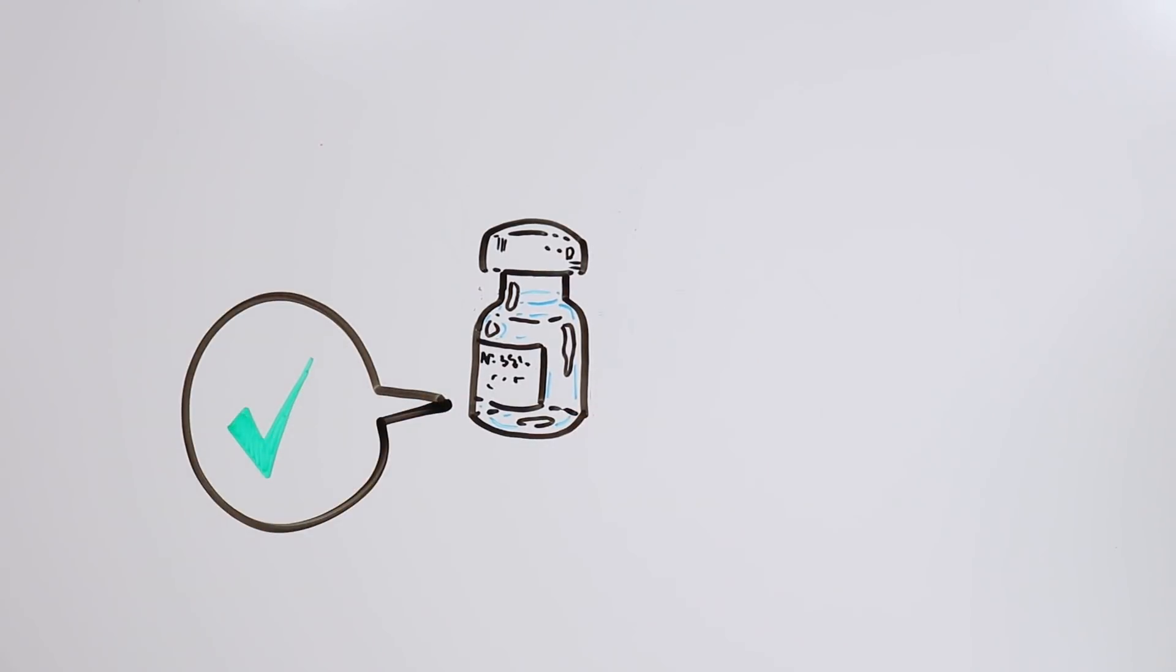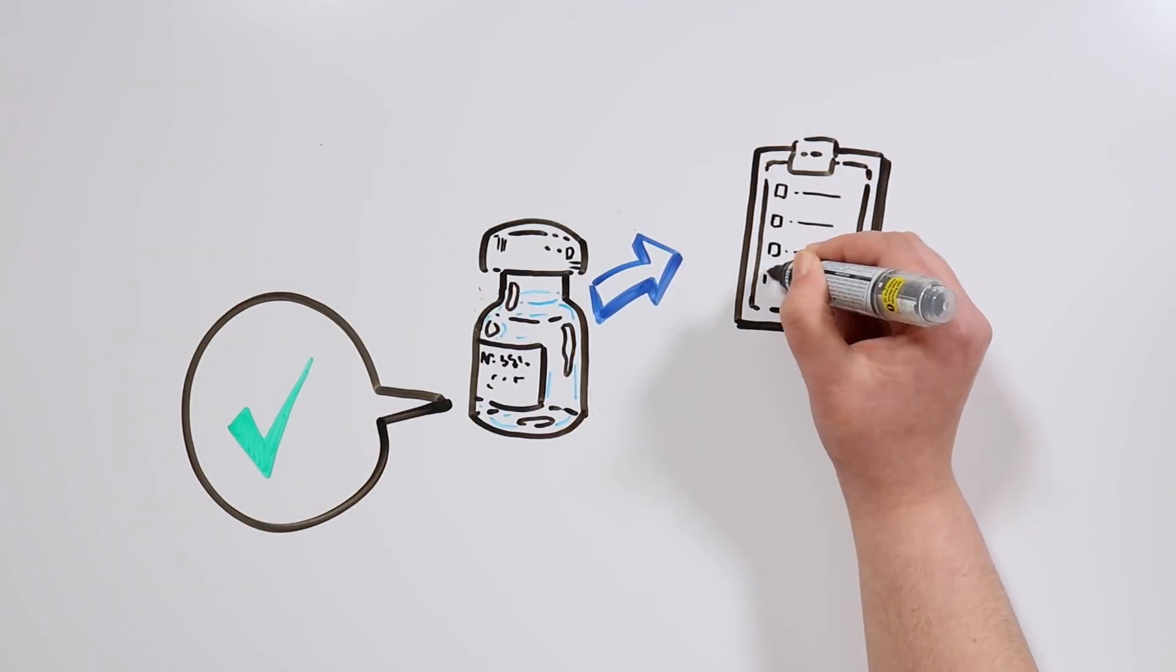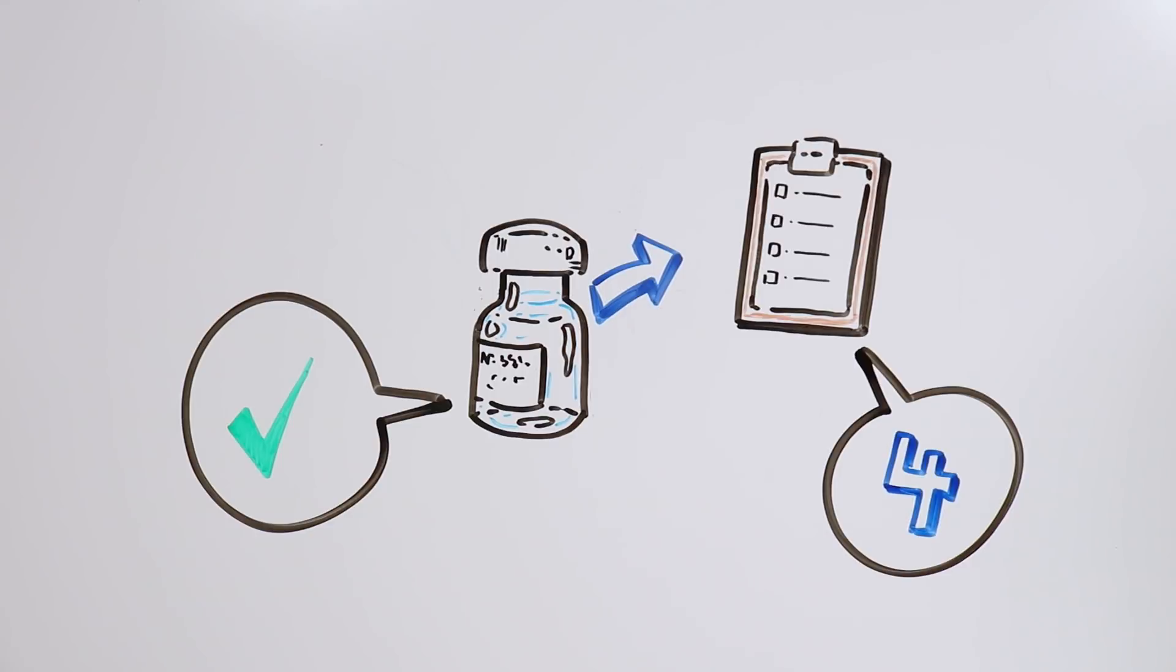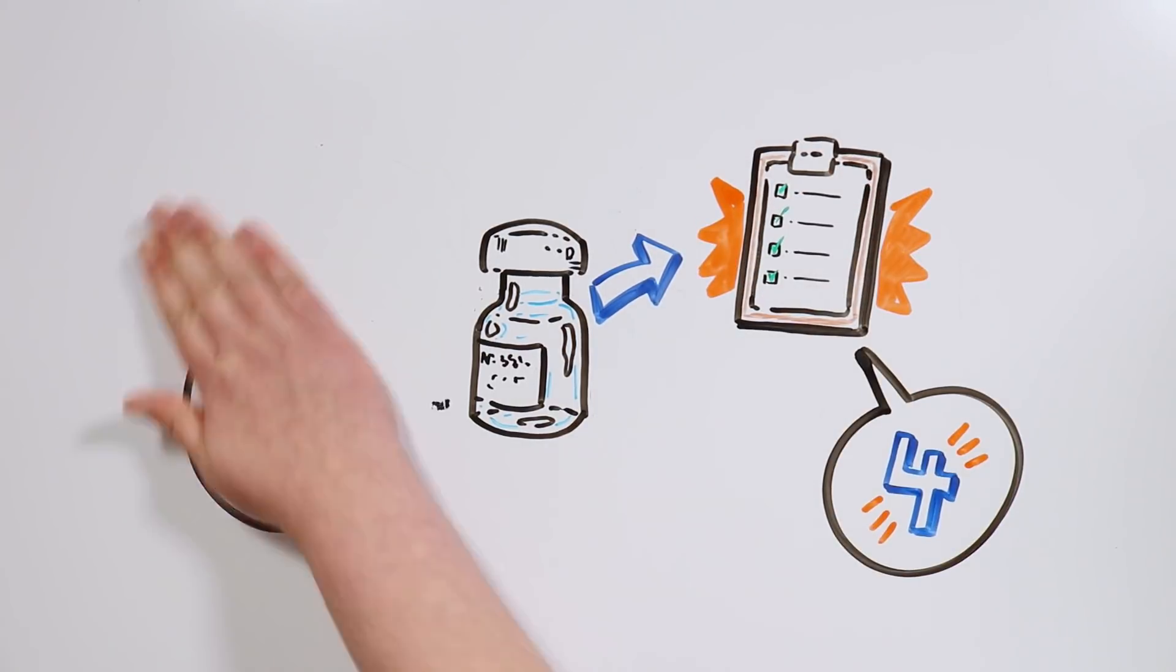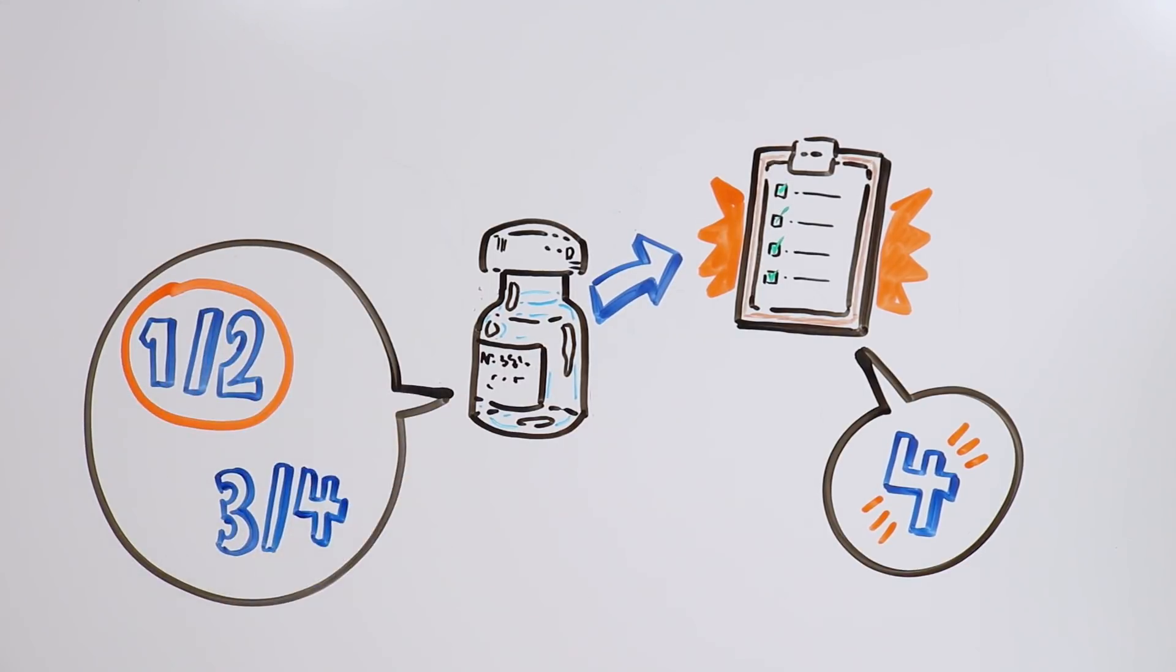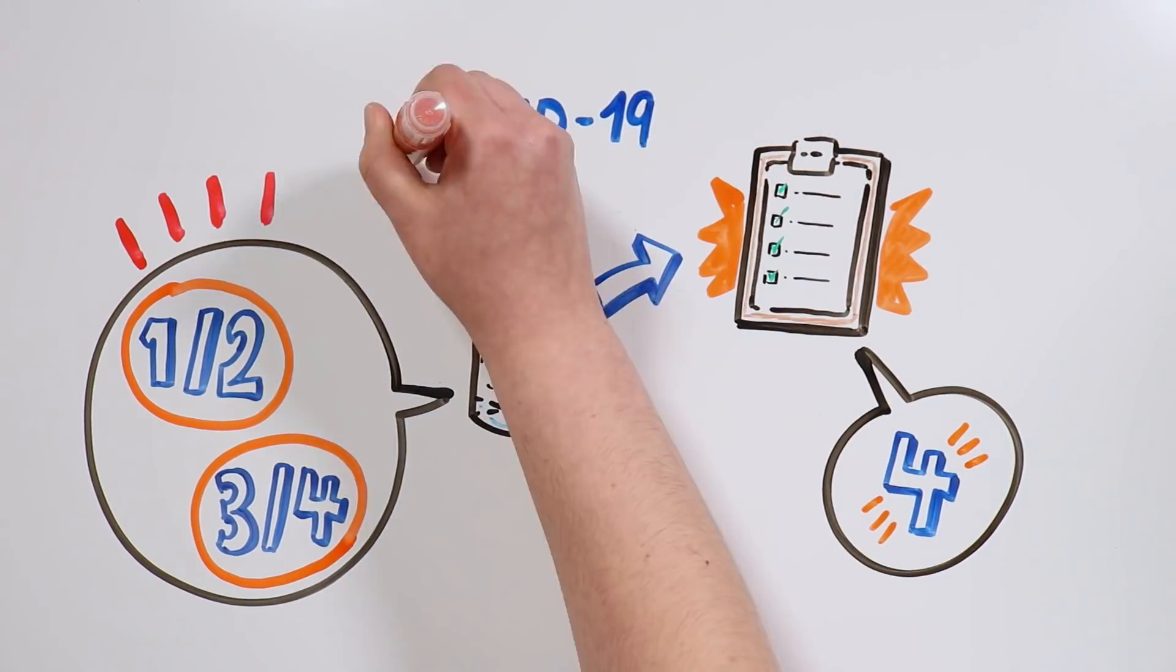For a vaccine to be approved, many different tests need to be carried out to ensure its effectiveness and safety. These tests are divided into four phases, and all of them have to be completed successfully. However, many of the phases could coincide at the same time, especially if the vaccine is needed quickly, as is the case of this current pandemic.